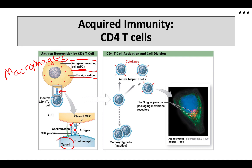Activation results in clonal expansion. We produce hundreds of little helper T cells that recognize exactly this antigen and nothing else. Those helper T cells then begin to produce and pump out cytokines, which communicate with the macrophages and the cytotoxic T cells of our immune system.